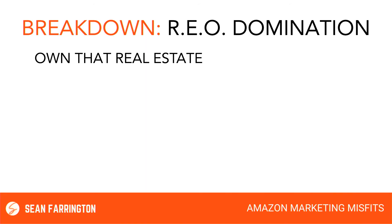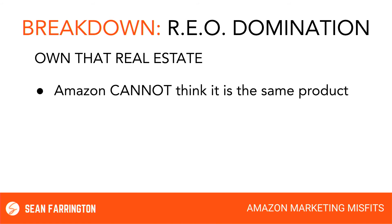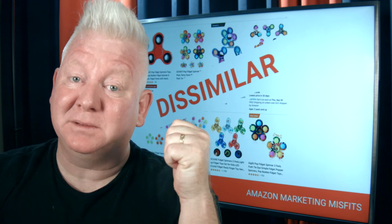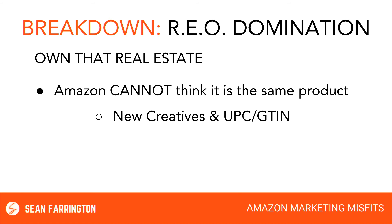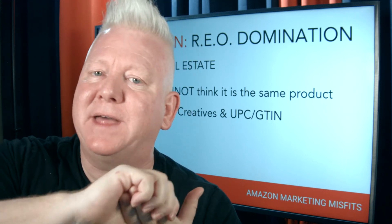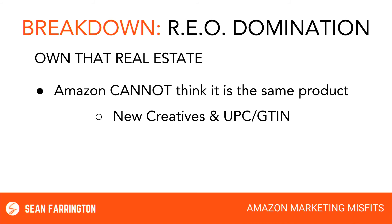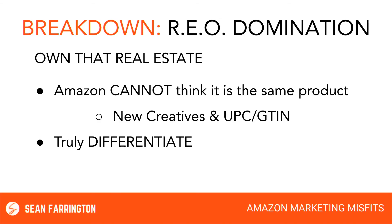You want to own all that real estate? Here are the details you need to know. First, Amazon cannot think this is the same product. They have to seem like different listings to Amazon — dissimilar, to offer variety to shoppers. How you do this is by offering new creatives and new UPC/GTIN codes. By creatives I mean the copy, the image stacks, all of that stuff that makes it truly seem like a different listing on Amazon. You do not want that A9 algorithm getting any hint of connection between these listings.